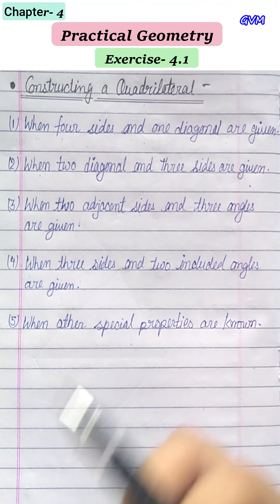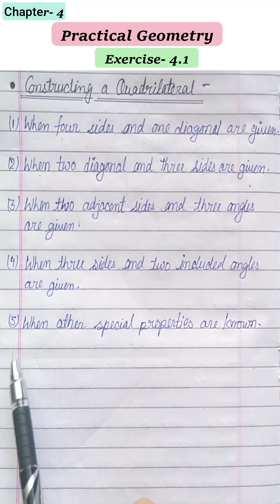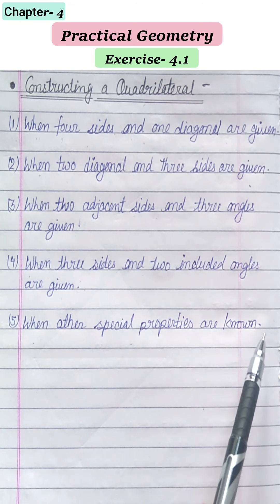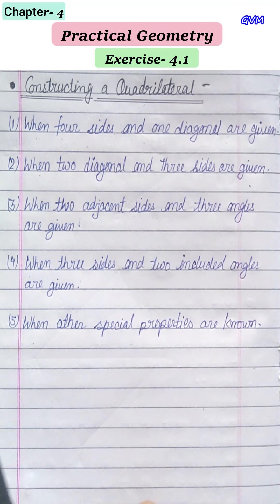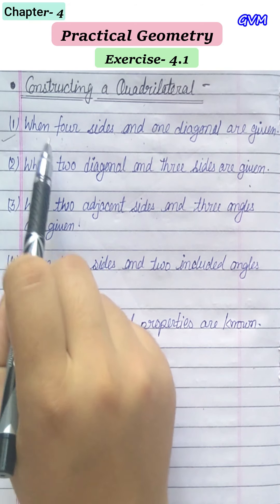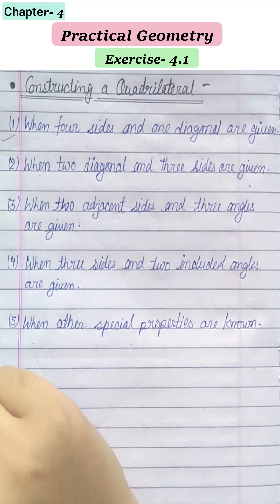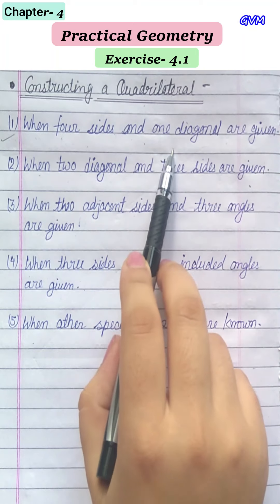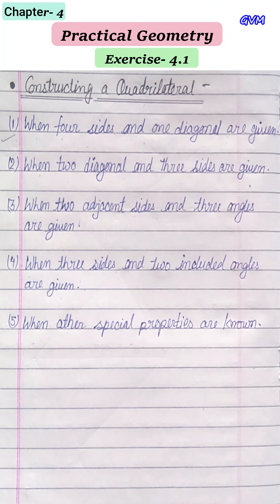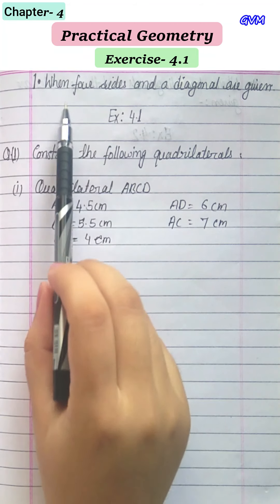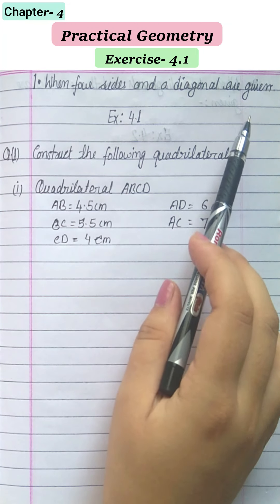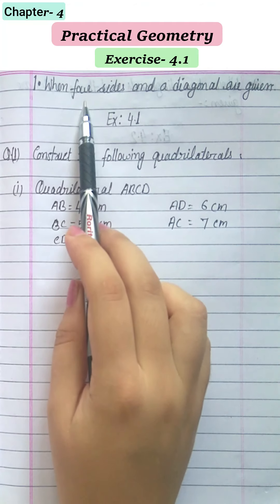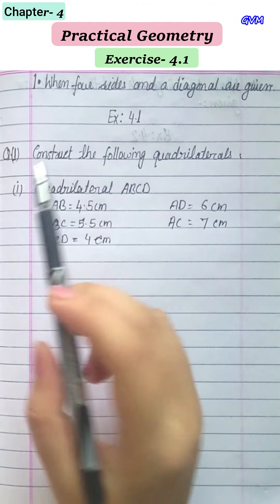The first exercise is all about the first case: when four sides and one diagonal are given. We will learn how to construct quadrilaterals in this case by doing questions from the exercise itself. This is when we have the length of four sides and one diagonal given.